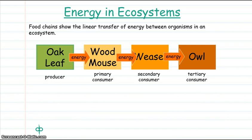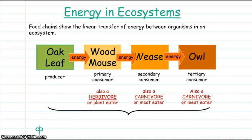The wood mouse, the primary consumer that eats the oak leaf. The weasel, the secondary consumer, which eats the wood mouse. And the owl, the tertiary consumer, which would eat the weasel. The wood mouse is a herbivore. The weasel and the owl are both carnivores.